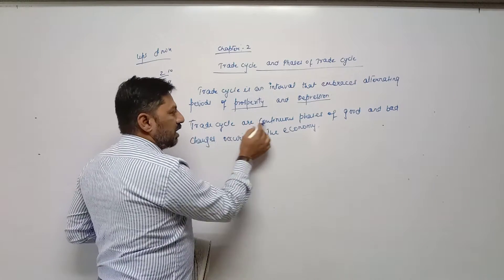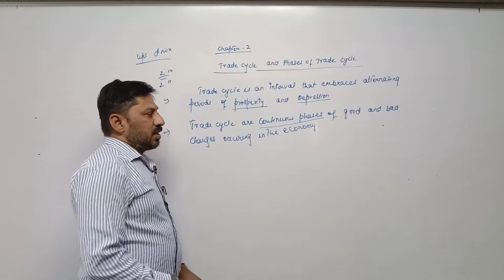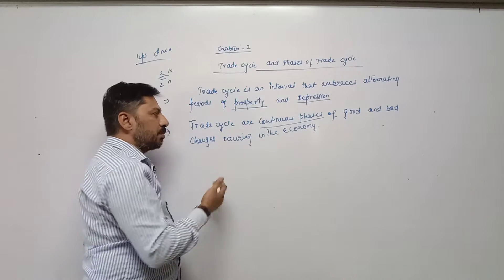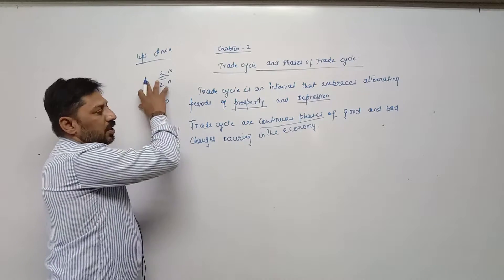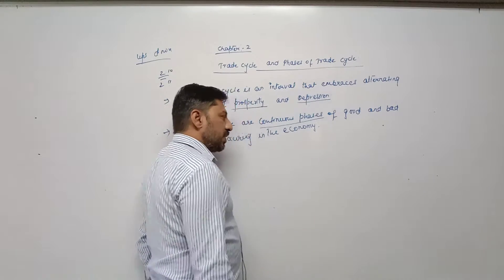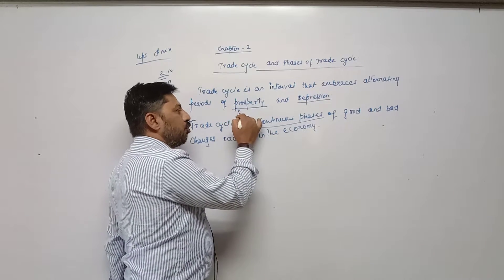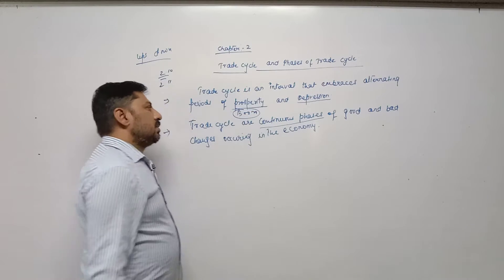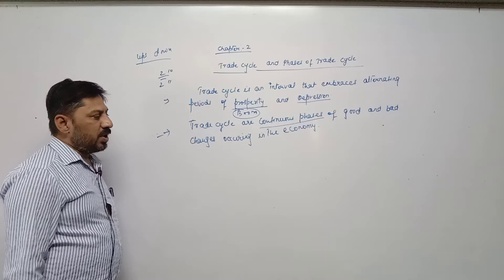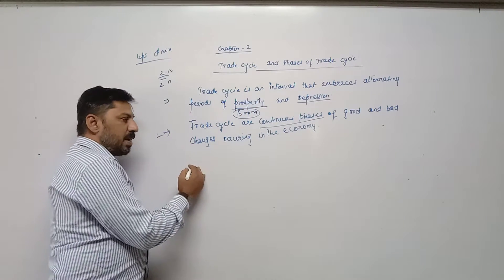Another definition: trade cycle are continuous phases. We say continuous phases because every situation, whether prosperity or depression, does not remain constant for a longer period — it changes after a regular interval. That's why these are called continuous phases of good and bad changes occurring in the economy. Trade cycles are full of ups and downs; it is a continuous process where changes continuously occur in the economy, bringing good or bad situations. Good situation is called prosperity period, also known as boom period.